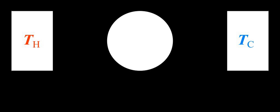J. G. Kirkwood and I. Oppenheim define thermodynamic equilibrium as follows: a system is in a state of thermodynamic equilibrium if, during the time period allotted for experimentation, (a) its intensive properties are independent of time, and (b) no current of matter or energy exists in its interior or at its boundaries with the surroundings. They are not restricting the definition to isolated or closed systems. They note that for two systems in contact, there exists a small subclass of intensive properties such that if all those of that subclass are respectively equal, then all respective intensive properties are equal. States of thermodynamic equilibrium may be defined by this subclass, provided some other conditions are satisfied.